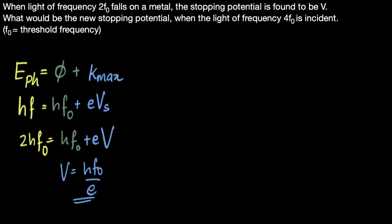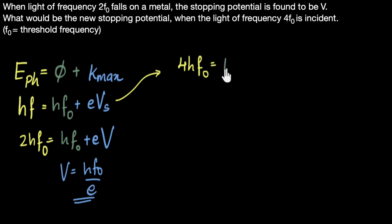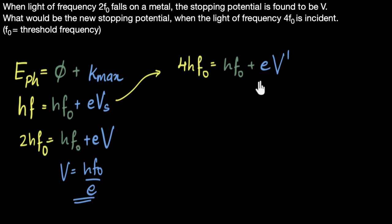Now for the second case, when F is equal to 4F₀, the equation becomes: 4HF₀ equals HF₀ plus E times some new stopping voltage V'. Simplifying, 4HF₀ minus HF₀ gives 3HF₀, so V' equals 3HF₀ divided by E.